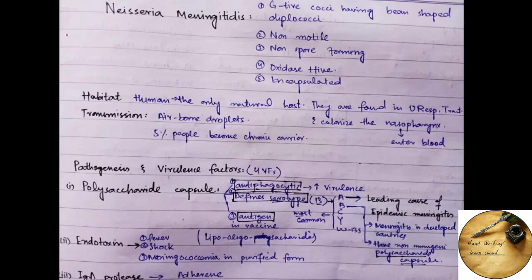The important points regarding Neisseria meningitidis are that it is a gram-negative diplococcus having bean-shaped appearance. It is non-motile, non-spore forming and oxidase positive, and it is also encapsulated.